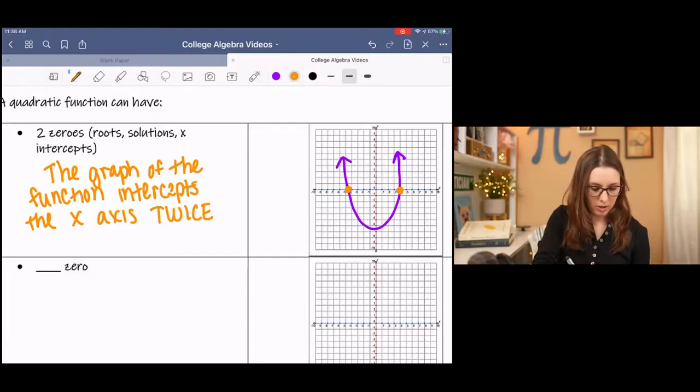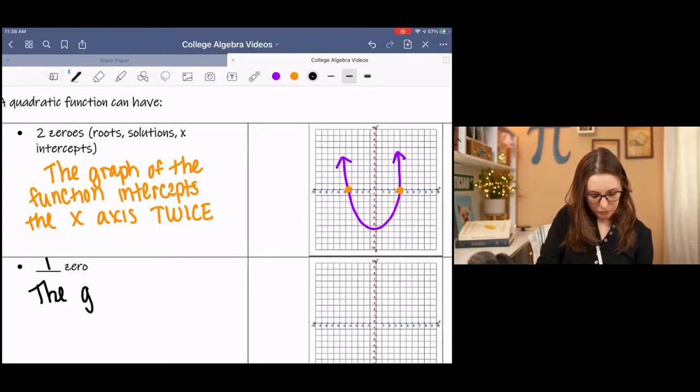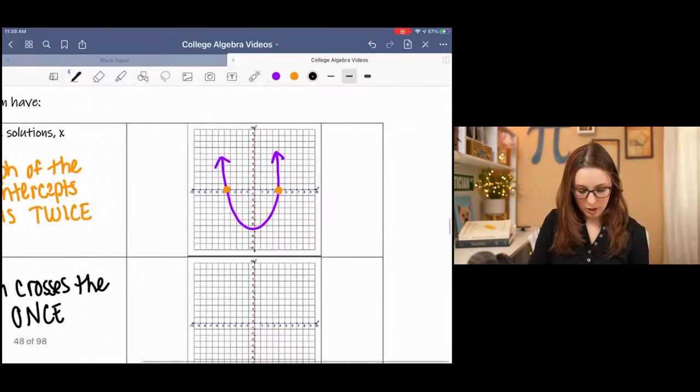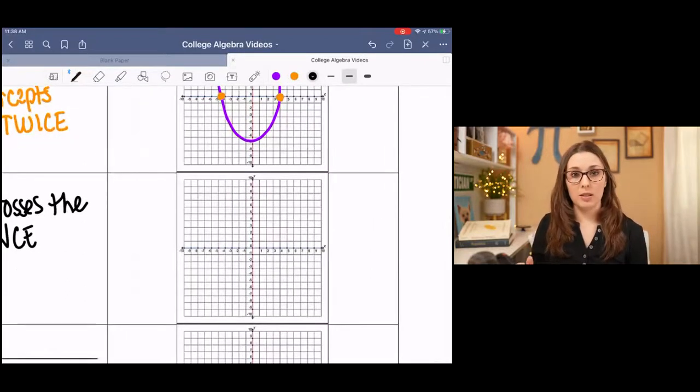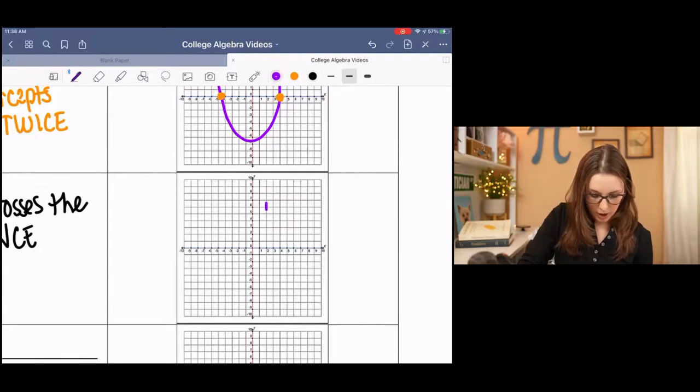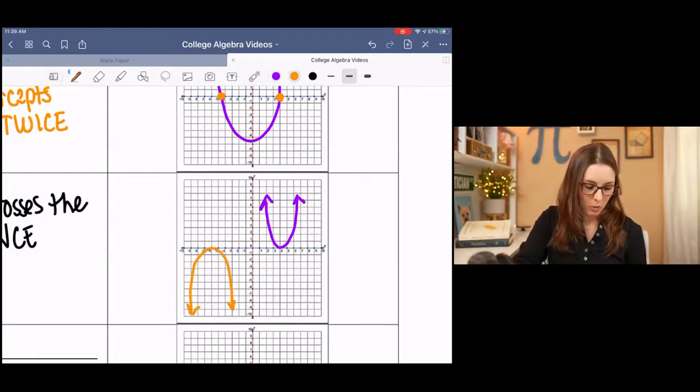And then there's a case where there is one zero, which means that the graph crosses the x-axis once. And so that's basically going to look like the vertex is going to touch down on the x-axis. It could be, I'm going to draw two different scenarios here. We could have something like that, or you could have something like that. So in either case, we have the vertex is on the x-axis. And that is also its only x-intercept. So in this case, it is a minimum and also an x-intercept. And this one is a maximum and also an x-intercept.